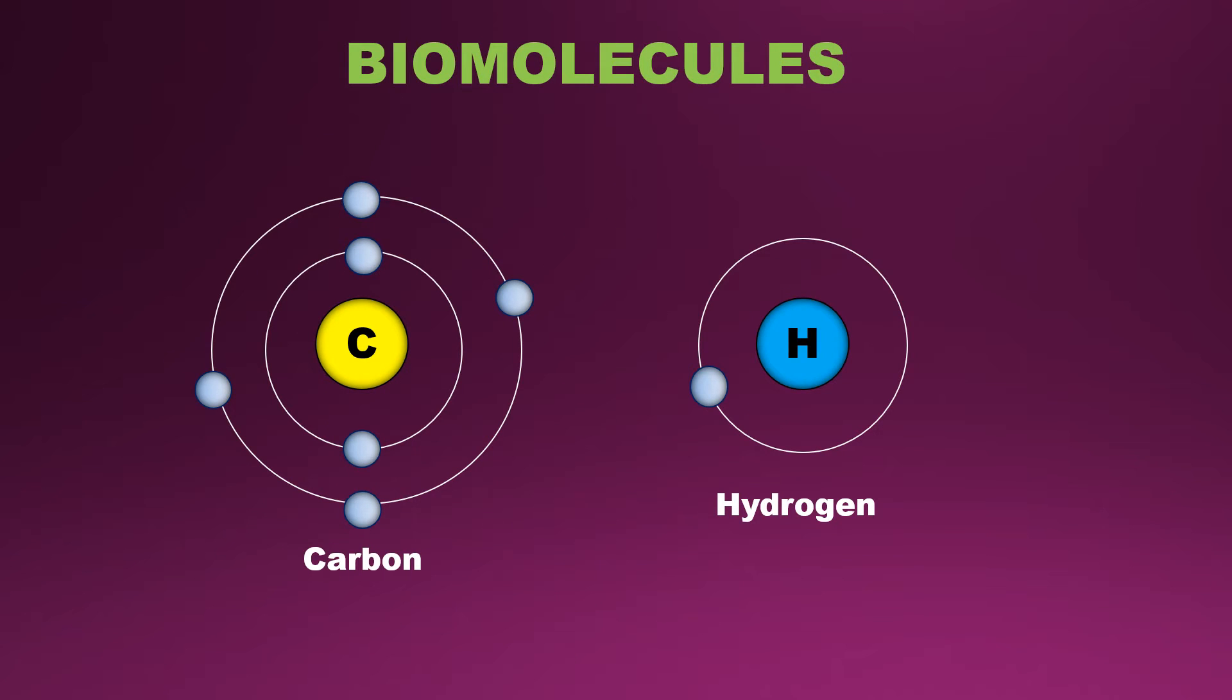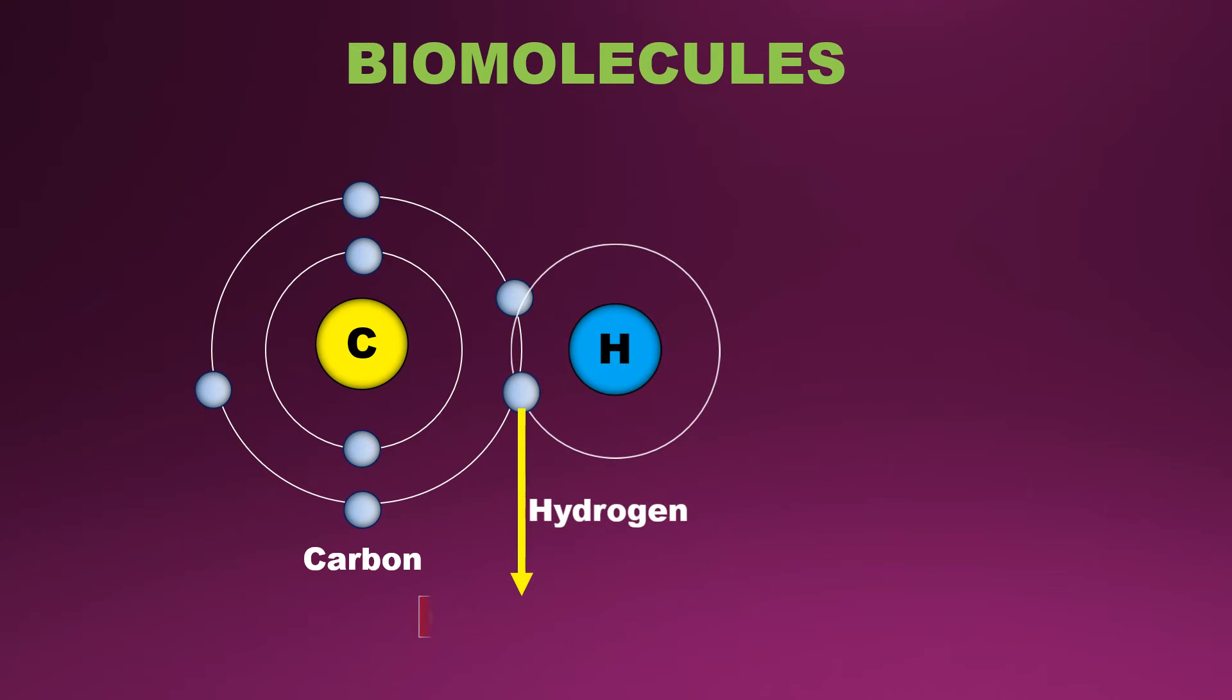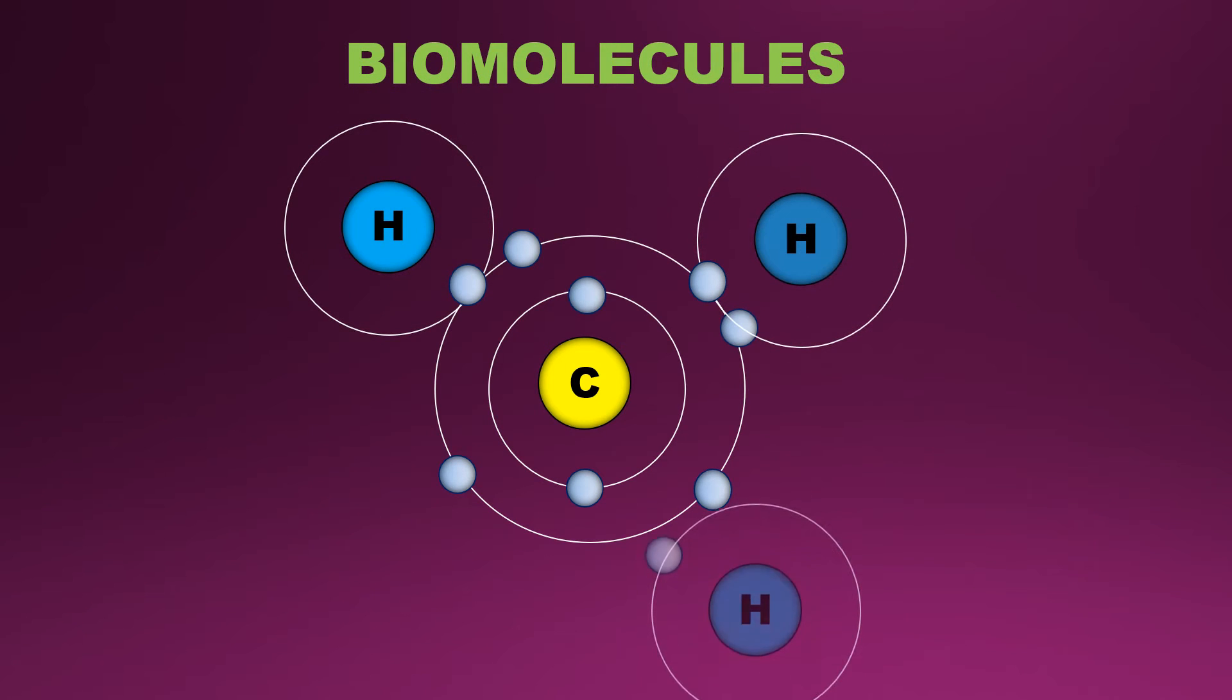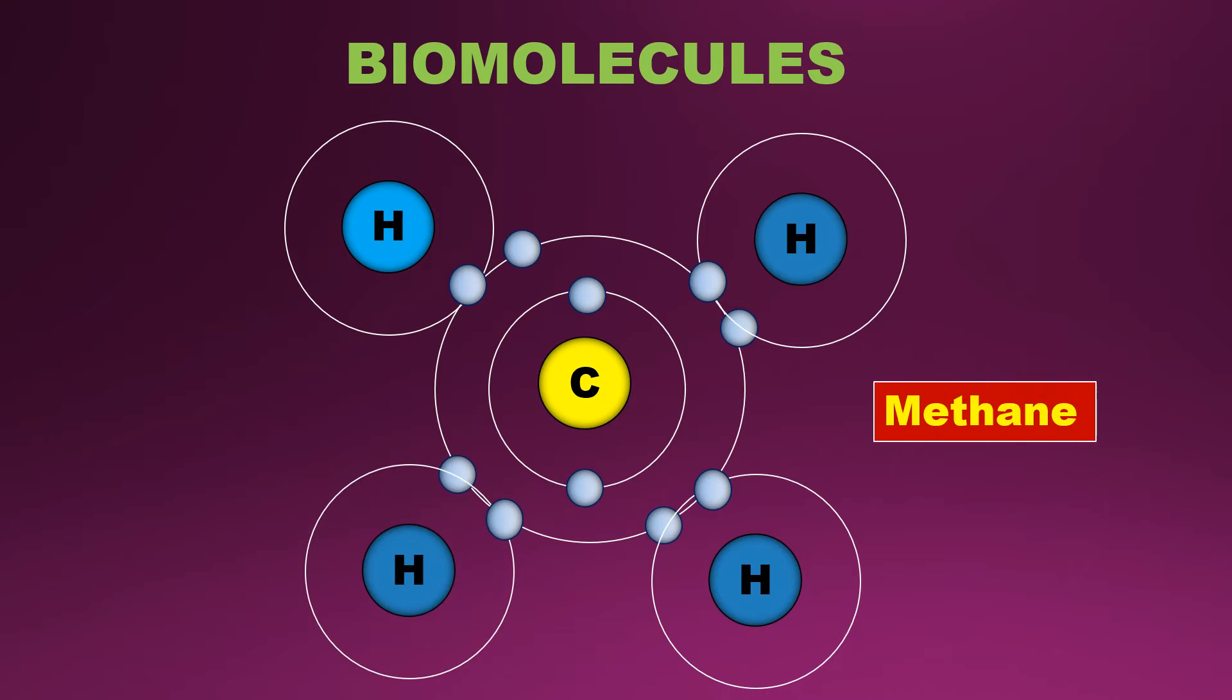Similarly, hydrogen atom is having only one valence electron in its outermost shell. Thus, carbon-hydrogen interaction also forms the covalent bond. In the same manner, four hydrogen atoms combines with one carbon atom to form methane.